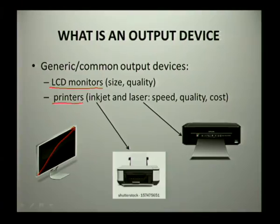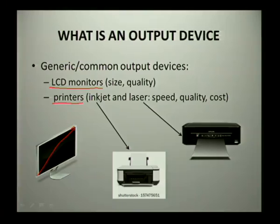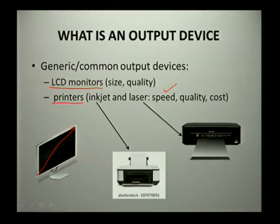Another form of output device is your printer. When you get output in the form of a printout, that means your output is a hard copy. We have different types of printers — inkjet and laser. In order to decide on an output device, you need to consider what you are going to print, how much you are going to print, and how much you are willing to spend. You also need to look at the speed of the printer — laser printers generally print faster than inkjet.